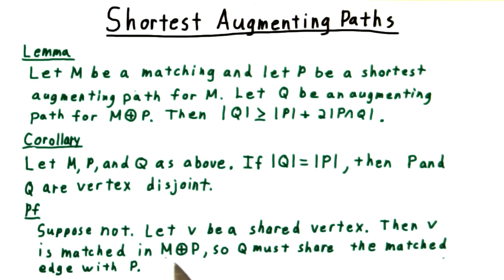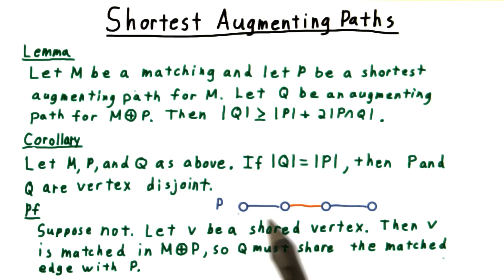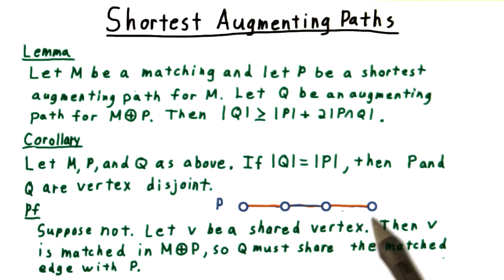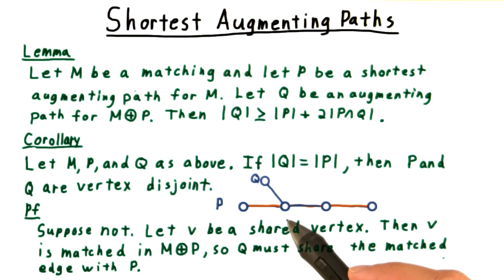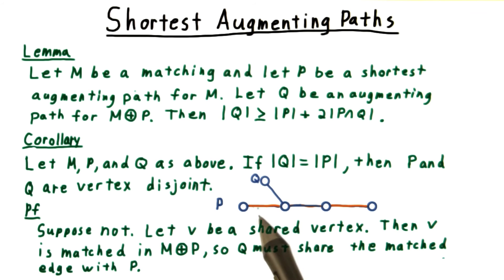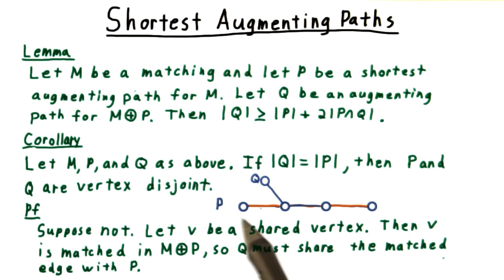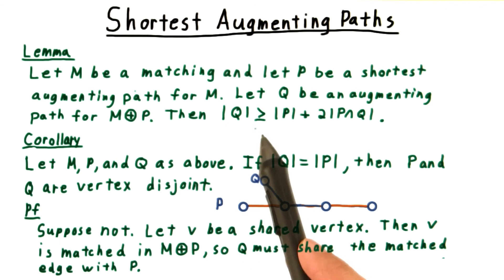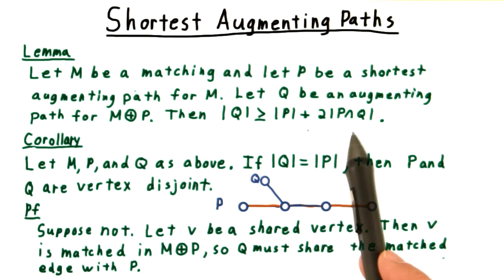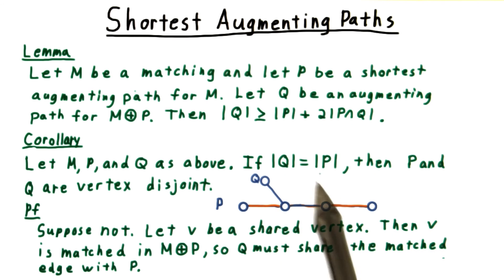Then v has to be matched in m augmented by p, so q must share the matched edge with p. We can visualize this argument by drawing p with the original matching m. Then once we augment it, p becomes like so. And regardless of what vertex the path q happened to share with it, that vertex is now matched in m augmented by p, so q has to follow that edge. But then q and p share an edge, and |q| is greater than |p| by at least two, and that then leads to a contradiction.